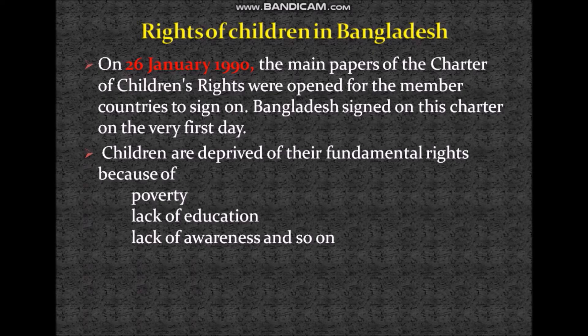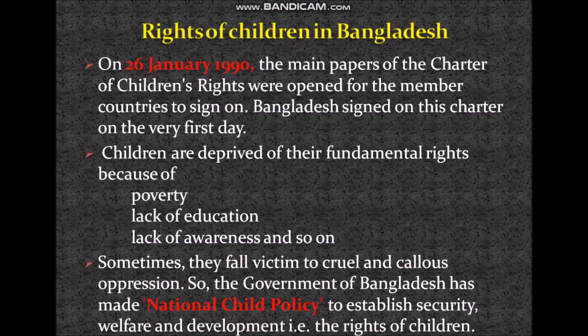Now, children are deprived of their fundamental rights because of poverty, lack of education, lack of awareness, and so on. There are many reasons, but these three are among the most important. There are many reasons behind the deprivation of children's fundamental rights, but the main reasons are poverty, lack of education, and lack of awareness. Sometimes they fall victim to cruel and callous oppression. So the government of Bangladesh has made a national child policy to establish security, welfare, and development — that is, the rights of children.